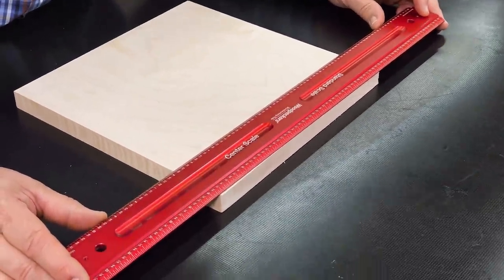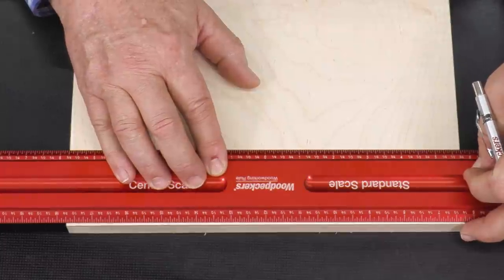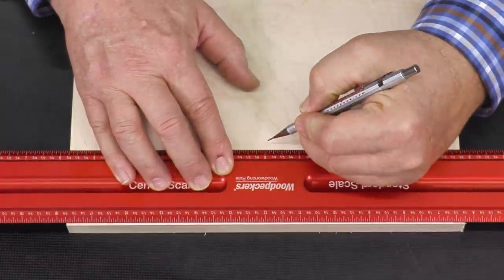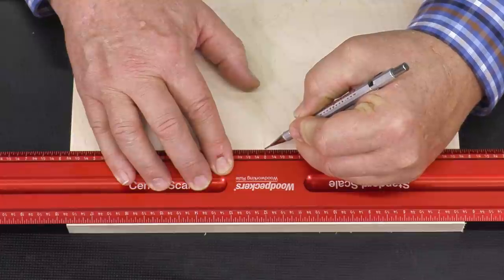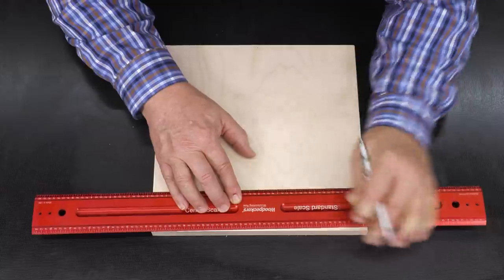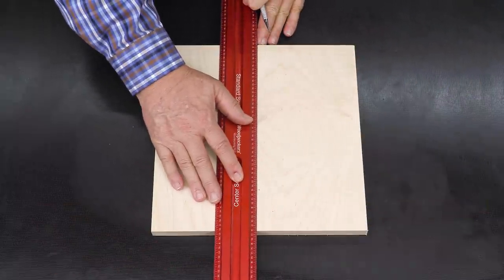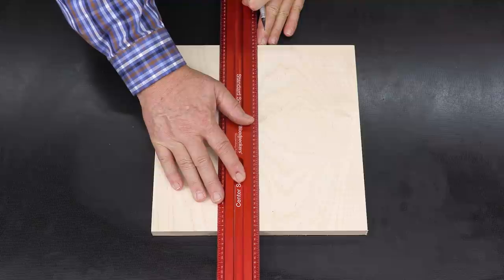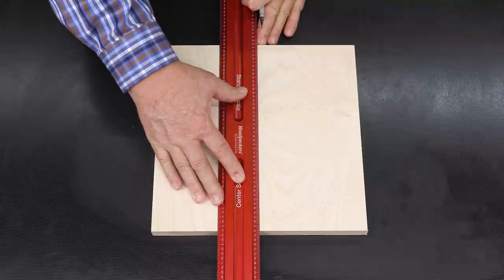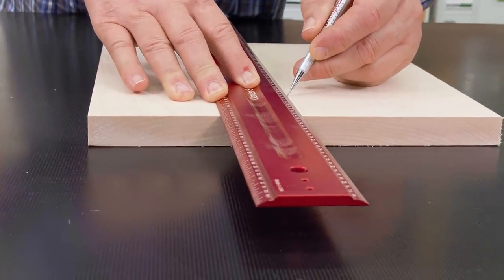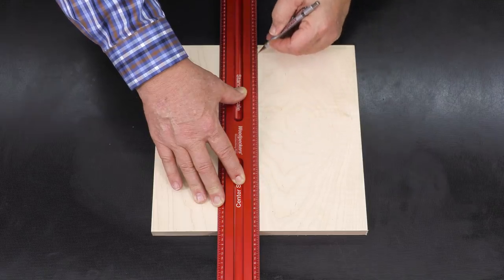I want to be as close as I can to be exactly the same spot on the other side. Now when we strike this center line everything else that we do is going to be based off this. So we want that center line in the middle of our board.